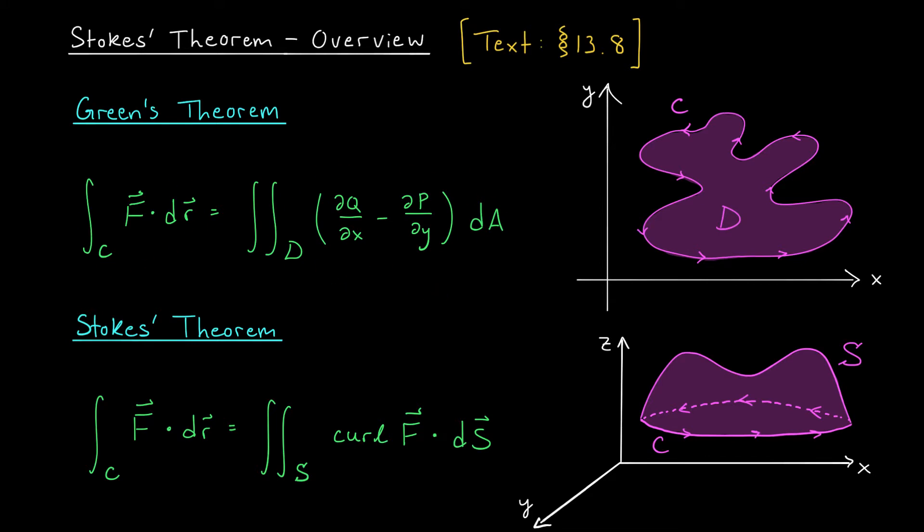Stokes' theorem does the same sort of thing, except we're connecting line integrals to surface integrals. So to set the stage for Stokes' theorem, try saying that five times fast, suppose that we have some surface S that has this ridge or edge given by the curve C. So S here just refers to this blob, and it's open at the bottom. So C is the edge or the boundary of this curve.